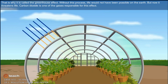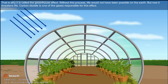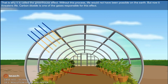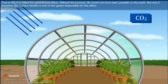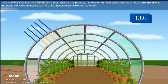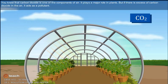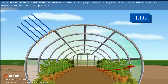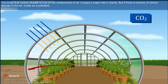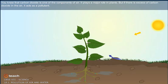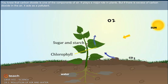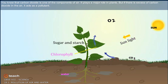Without this process, life would not have been possible on the earth. But now it threatens life. Carbon dioxide is one of the gases responsible for this effect. You know that carbon dioxide is one of the components of air and it plays a major role in plants. But if there is excess of carbon dioxide in the air, it acts as a pollutant.